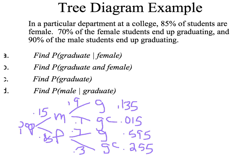Now we'll answer some questions about the tree diagram using conditional probability. The first question: what's the probability someone graduates given that they are female? Of all the females, what percent of them graduate? That's just this number right here — the 0.7 on the branch — so the answer is 0.7. Next: the probability that someone graduates AND is female. That's this outcome number, which is 0.595.